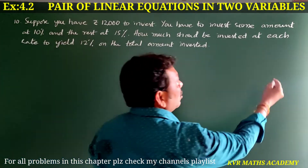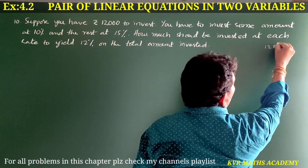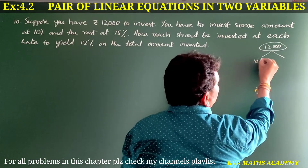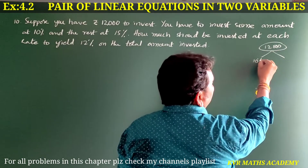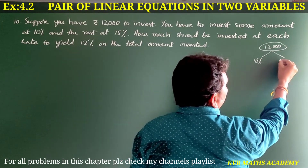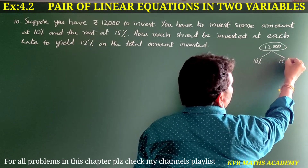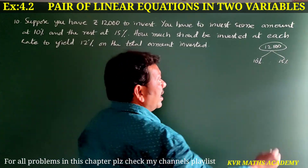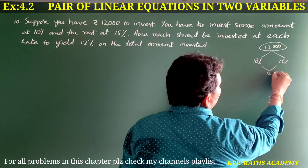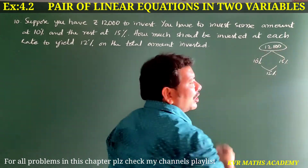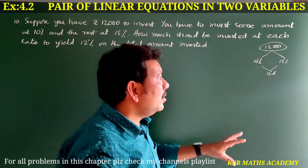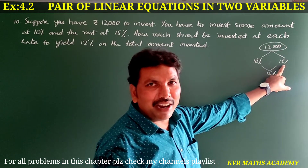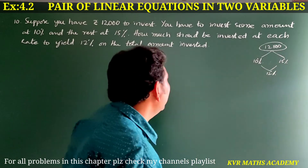Here, we have 12,000 rupees. We are investing some at a rate of 10% and the remaining amount at 15%, and we should get 12% on the total 12,000. We need to find how much should be invested at each rate.